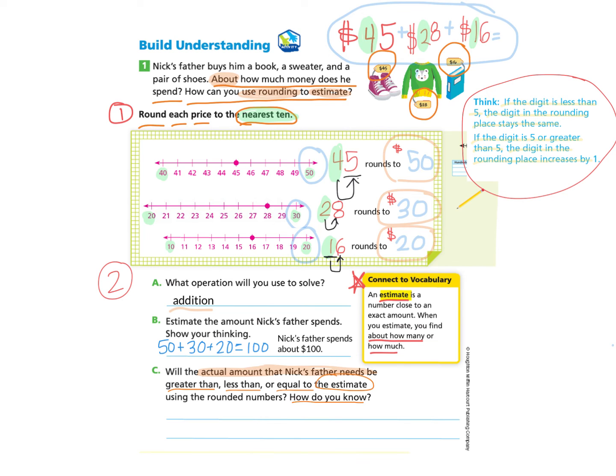And you'll notice that all the times that we rounded them to the nearest 10, the number increased. 45 went to 50, 28 rounded to 30, 16 rounded to 20. So they all were rounding to the greater 10.